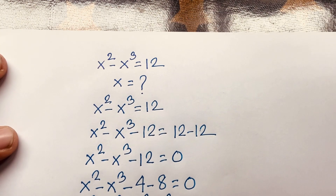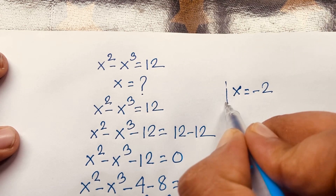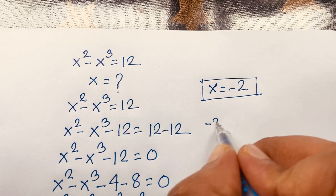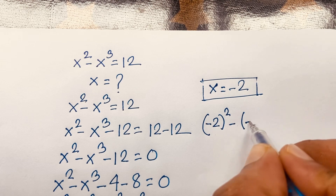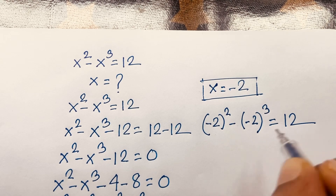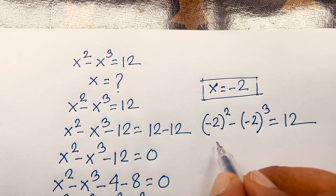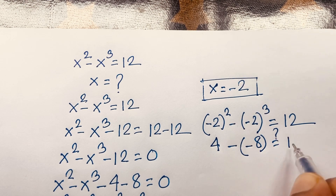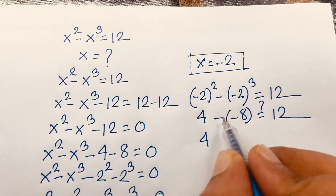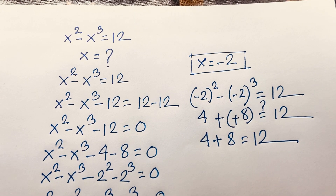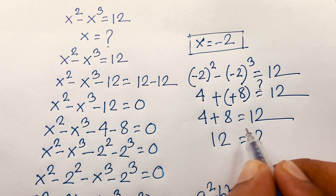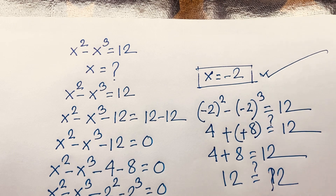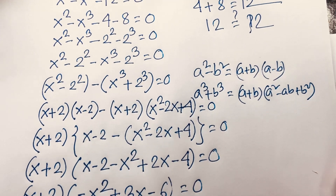Let's verify with x equals −2. Our question is x squared minus x cubed equals 12. Substituting: (−2) squared minus (−2) cubed equals 4 minus (−8) equals 4 plus 8 equals 12. So 12 equals 12 — confirmed. Therefore x equals −2 is the correct real answer.